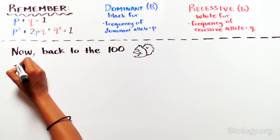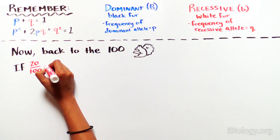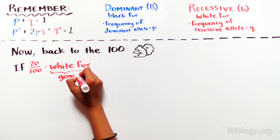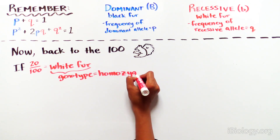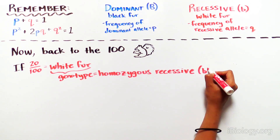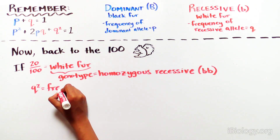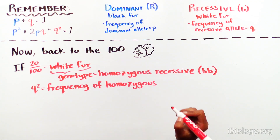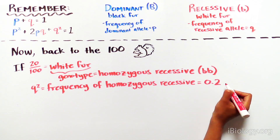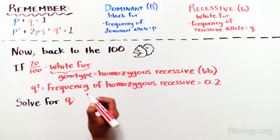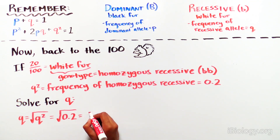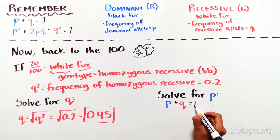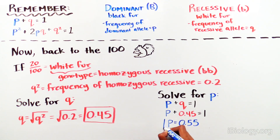Back to your squirrels: you find that 20 of the 100 squirrels have white fur, which corresponds to a frequency of 0.2. White fur is homozygous recessive (bb). Since Q squared is the genotype frequency of homozygous recessive, we know that 0.2 equals Q squared. We can solve for Q by taking the square root of 0.2, which gives us Q equals 0.45. Since P plus Q equals one, we can easily solve for P, which is 0.55.